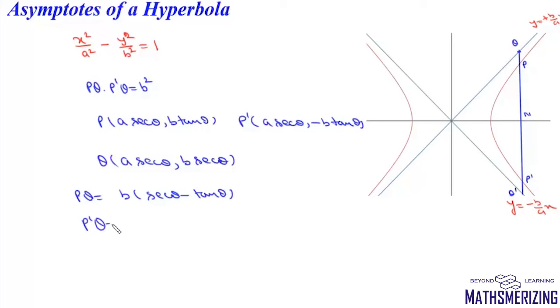We'll find P'Q. P'Q will be b secant theta minus (minus b tan theta), so it will be b times (secant theta plus tan theta).